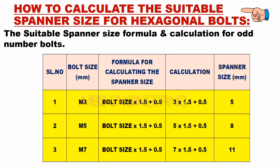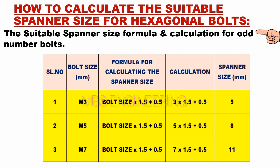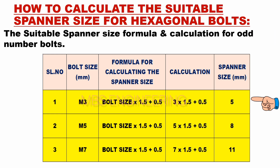The suitable spanner size formula and calculation for odd number bolts is listed below. Based on the above data and calculation, the suitable spanner size for bolt size M3 is 5 mm.